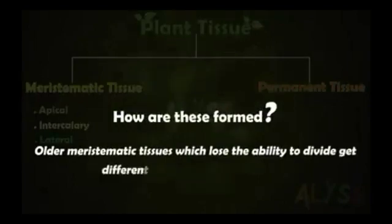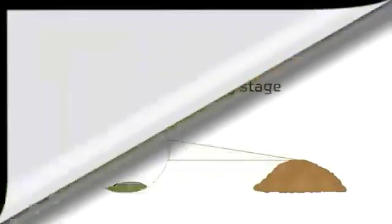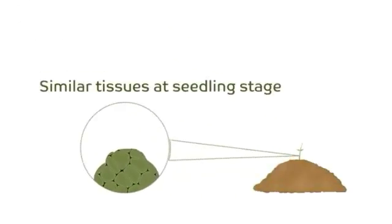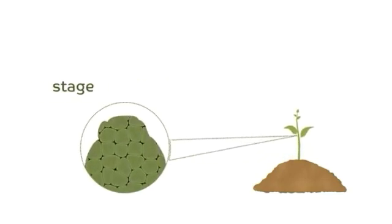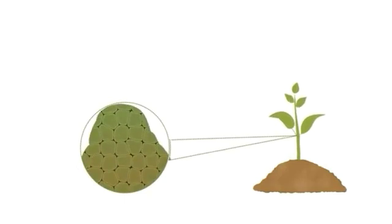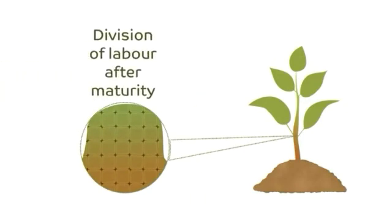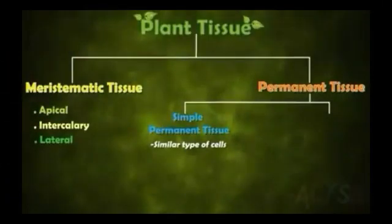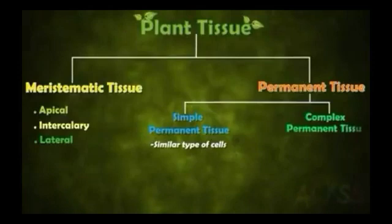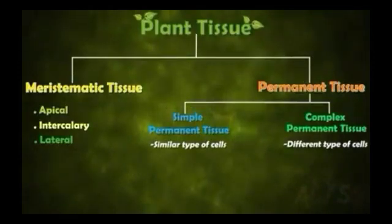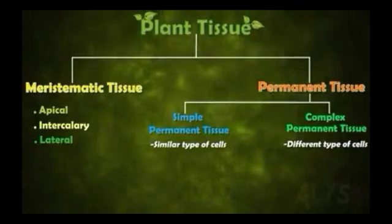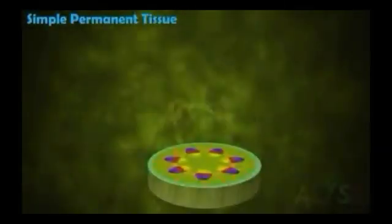The meristems differentiate and change into permanent tissues. Initially at the seedling stage, the plant is formed of the same type of cells. Upon growth, these cells start differentiating — they get a permanent shape, size, and function, resulting in division of labor. Such tissues are known as permanent tissues, which are further divided into simple and complex permanent tissues. Simple permanent tissue is made up of similar types of cells, whereas complex permanent tissue contains different types of cells.